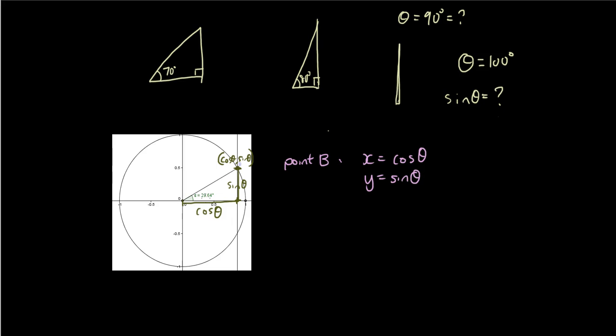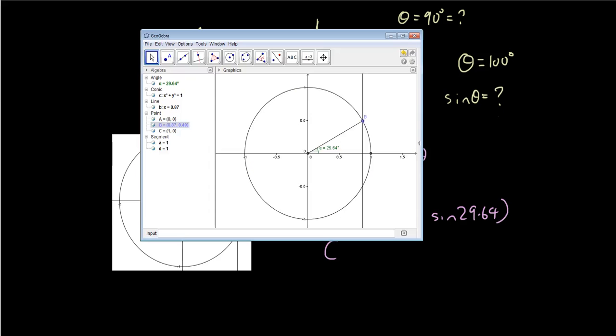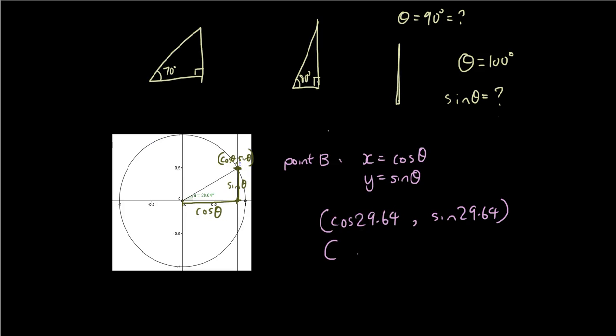So I'll just write that here as well. Point B, x equals cosine theta and y equals sine theta. So for example right now we have 29.6 degrees so point B right now has cosine as the x-coordinate and sine as the y-coordinate which is the x-coordinate of B is 0.87 and 0.49. So point B has 0.87 and 0.49 as the x and y-coordinates of point B.